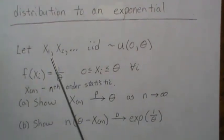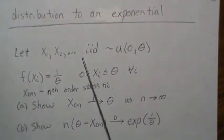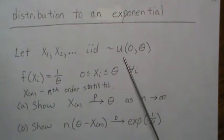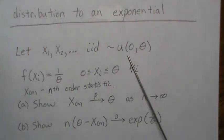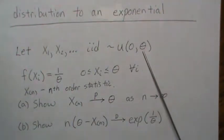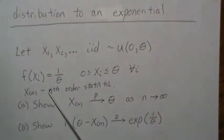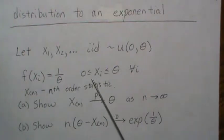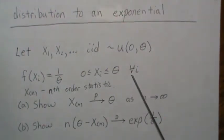So if we let x1, x2, be independent identically distributed uniform random variables and the uniform distribution goes from zero to theta. So the density function is this and all xi must be between zero and theta for all i.